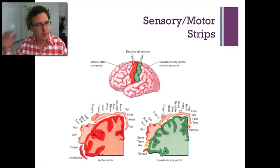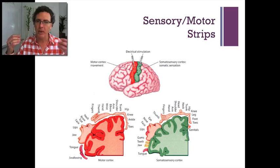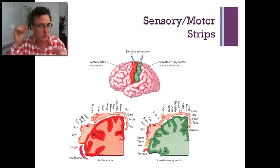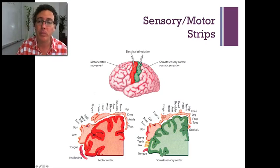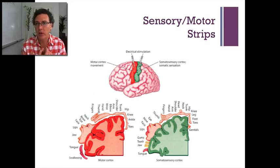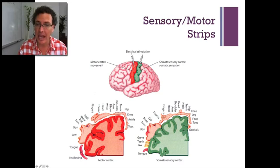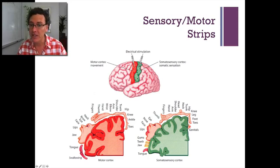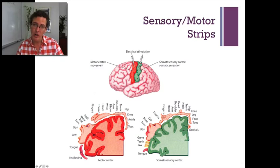Remember: the occipital lobe has primary visual cortex, the temporal lobe has primary auditory cortex — that's where raw visual and auditory stimuli come in. For the parietal lobes, that primary cortex is devoted to sensation — literally feelings on our body. When something touches our body, it activates parts of this area called the somatosensory cortex, sometimes called the sensory strip because it's organized on a strip, with the rest of the parietal lobe behind it.